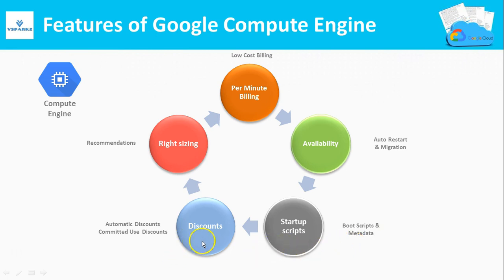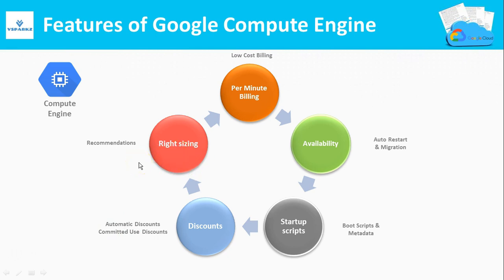Coming to discounts, Google offers two kinds of discount models. If you are running a VM in GCP on-demand without reservations, Google will give you discounts automatically based on usage — this is called sustained use discounts, or simply automatic discounts. The second type is committed use discounts, where you reserve a VM for a certain duration such as months or years. Only by making that reservation commitment will you receive those discounts. Additionally, Google Cloud provides automatic right-sizing recommendations based on the workload running in your VMs, which helps save cost.